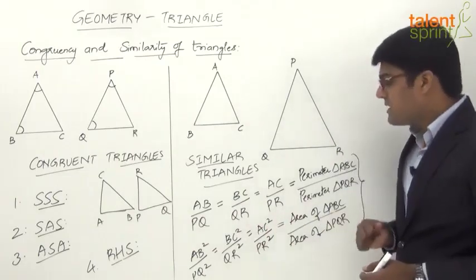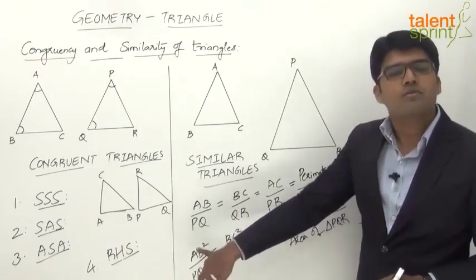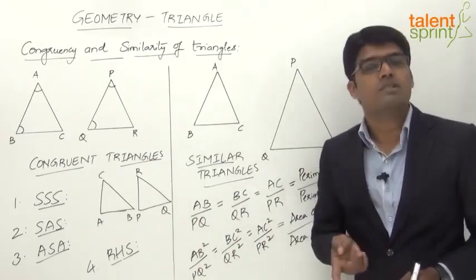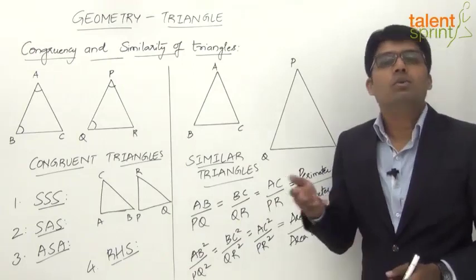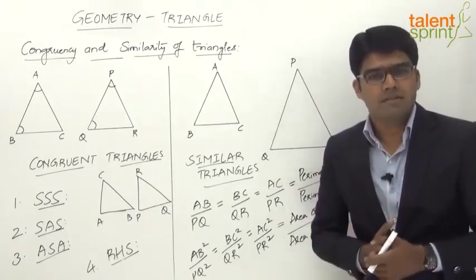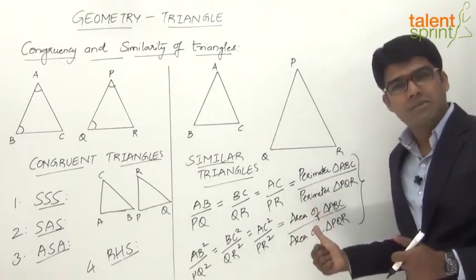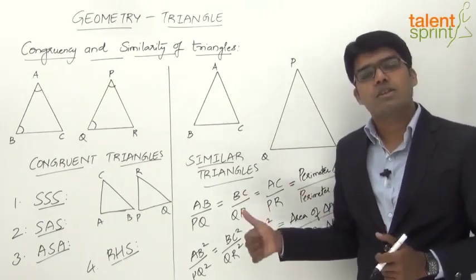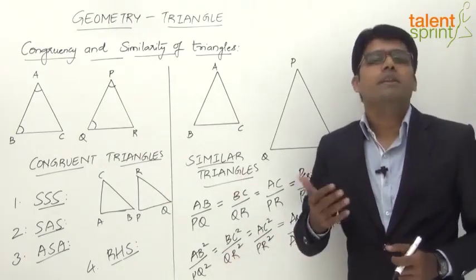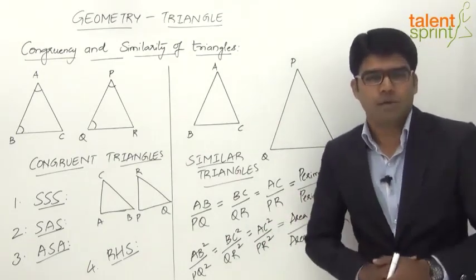Also note that in similar triangles, the ratio of the areas is not only equal to the ratio of squares of any two corresponding sides, but also equal to the ratio of squares of any two corresponding altitudes or any two corresponding medians. We will learn about altitudes and medians in the next part. Remember: the ratio of areas of two similar triangles equals the ratio of squares of corresponding sides, altitudes, or medians.